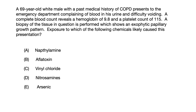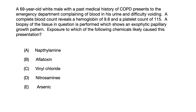Let's get right into today's video. A 69 year old white male with a past medical history of COPD presents to the emergency department complaining of blood in his urine and difficulty voiding. A complete blood count reveals a hemoglobin of 9.8 and a platelet count of 115. A biopsy of the tissue in question is performed, which shows an exophytic papillary growth pattern.